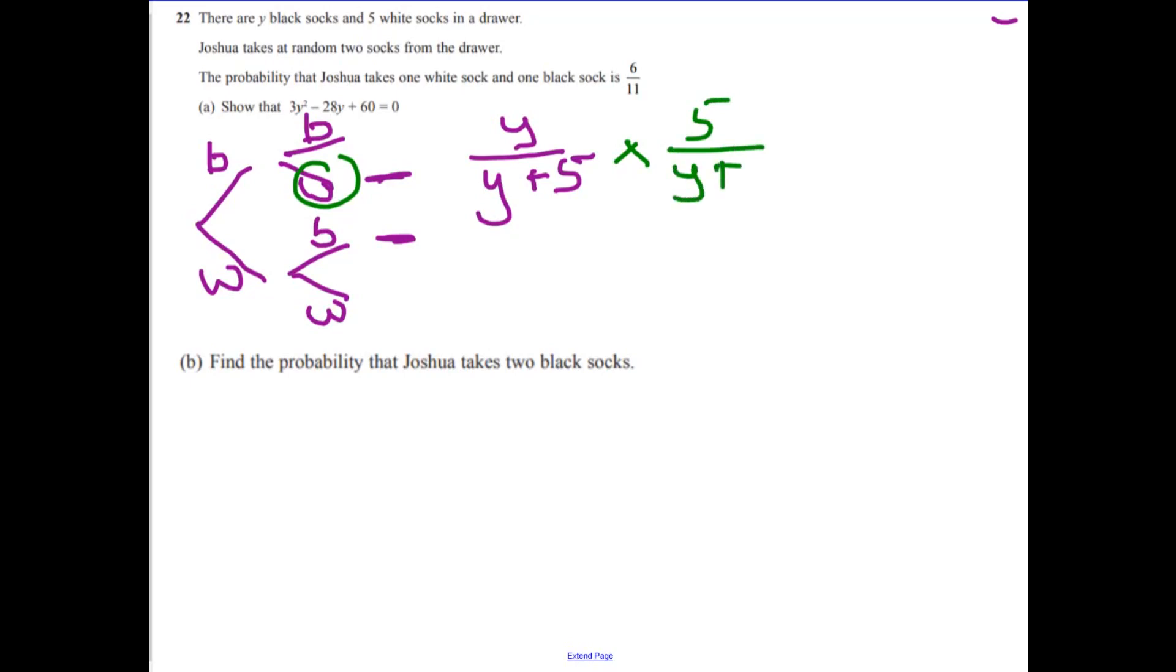And then coming down this branch down here, the chances of getting that first white sock: five because there's five initially, and y plus five. And multiply that by the chances of getting a black sock, which would be y over y plus four.